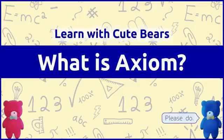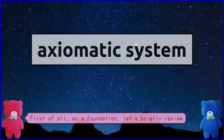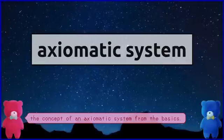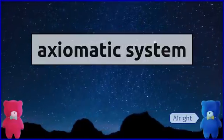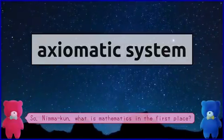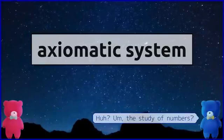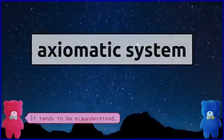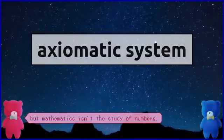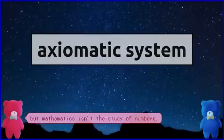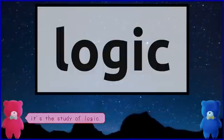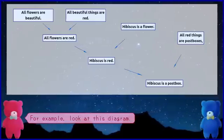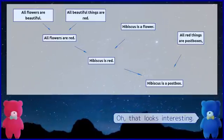Please do. First of all, as a foundation, let's briefly review the concept of an axiomatic system from the basics. Alright. So, what is mathematics in the first place? The study of numbers? It tends to be misunderstood. But mathematics isn't the study of numbers — it's the study of logic. What do you mean? For example, look at this diagram. Oh, that looks interesting.